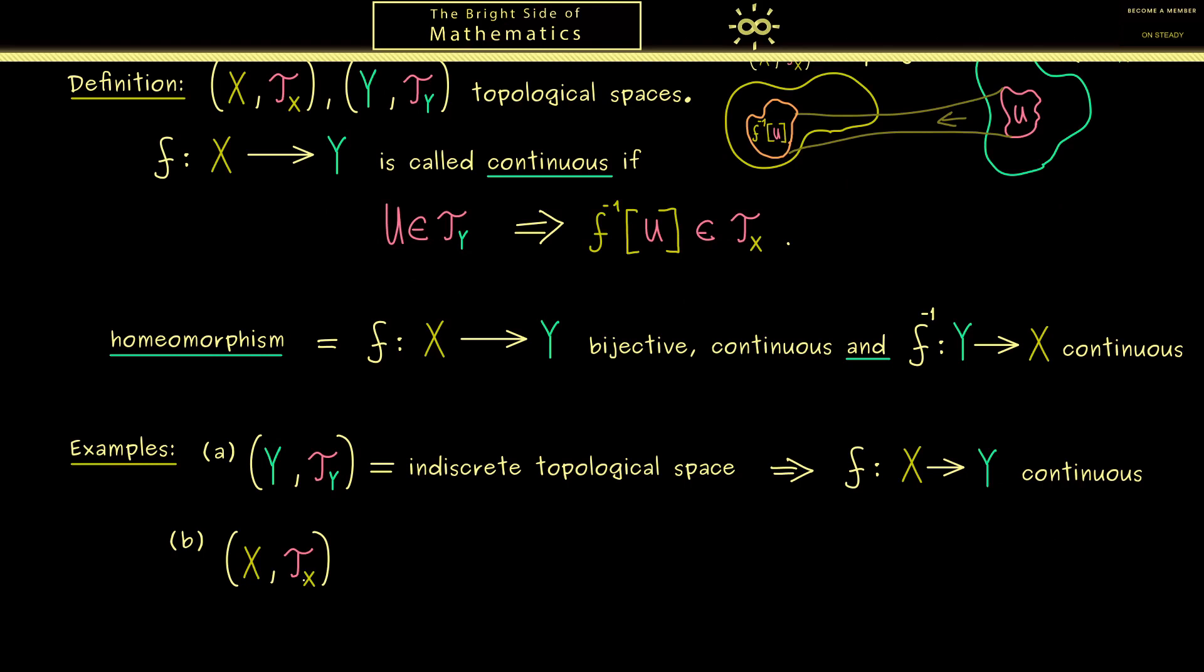Now on the other hand the other extremum would be that X is the discrete topological space. Here please also recall this means that all subsets of X are open sets. So Tx is simply the power set of X. Therefore you also immediately see it's no problem at all to fulfill this implication. So no matter which topology we choose on Y, we always get continuous maps.